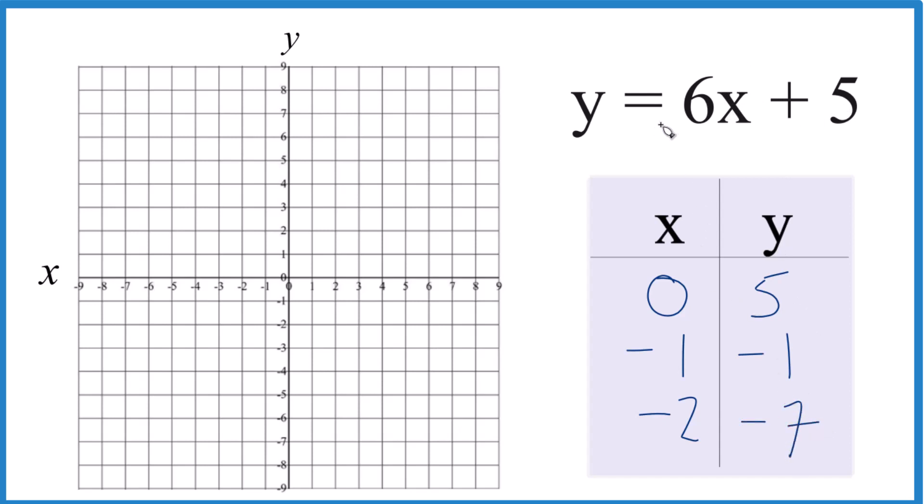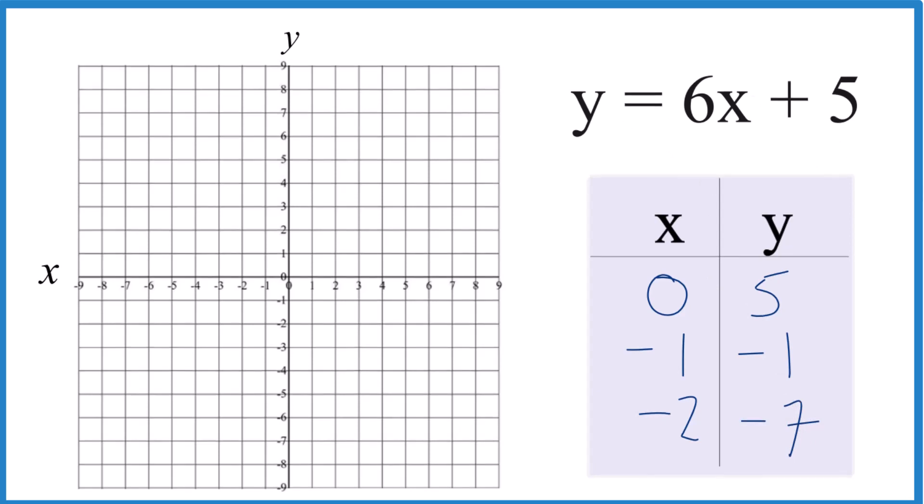So now we can plot these points, and we'll get the graph for the linear equation y equals 6x plus 5. So we have x is 0, y is 5.